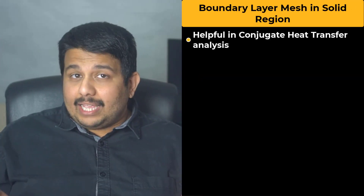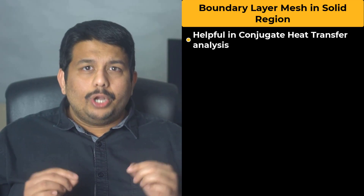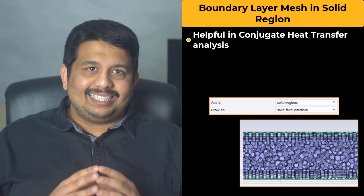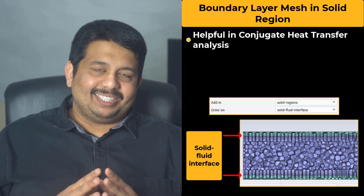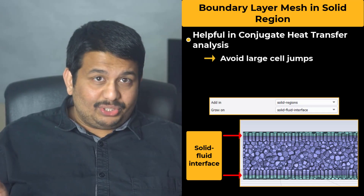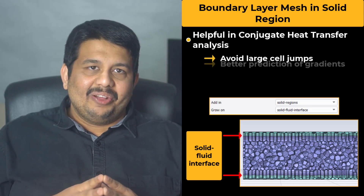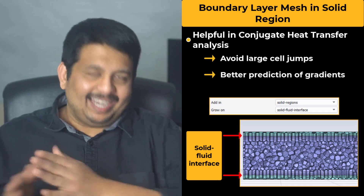The Add In input also provides the option to add layers in the solid regions if required by the user. This is helpful in cases like conjugate heat transfer analysis, where it is recommended to add a few boundary layer cells in the solid region along with the fluid region at the solid-fluid interface. This is to avoid large cell jumps at the solid-fluid interface for better prediction of temperature distribution and gradients across the interface.